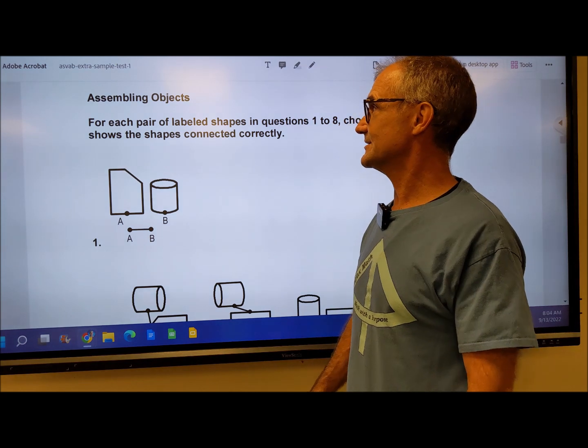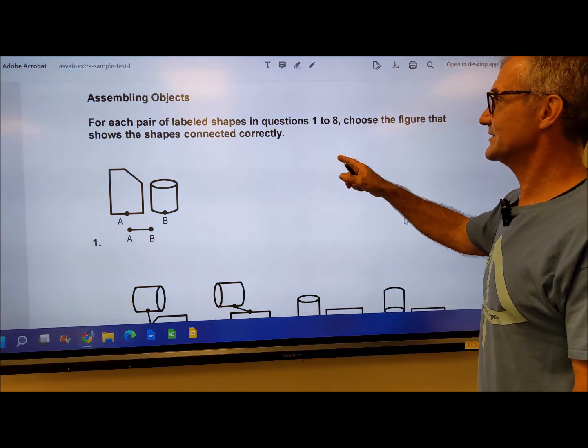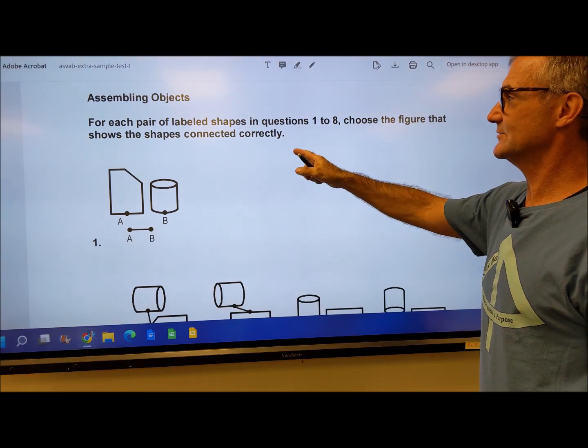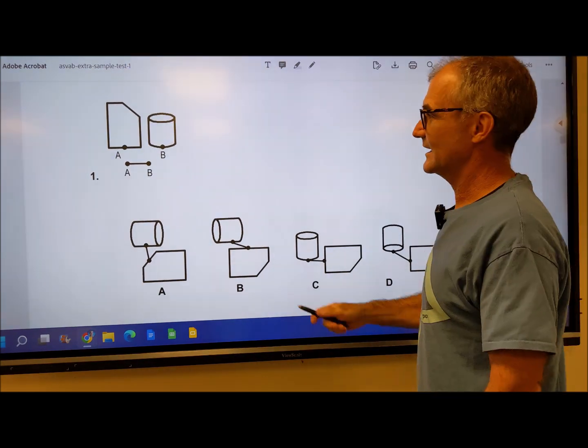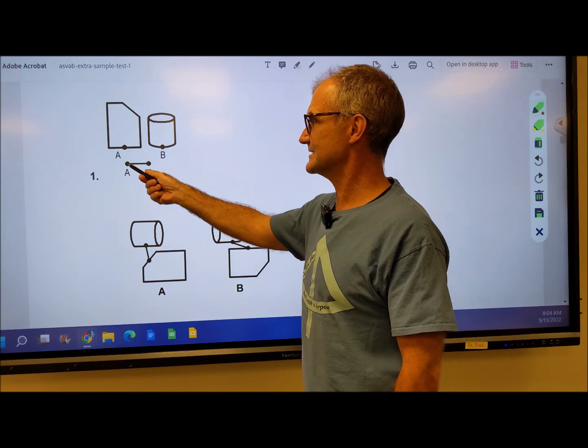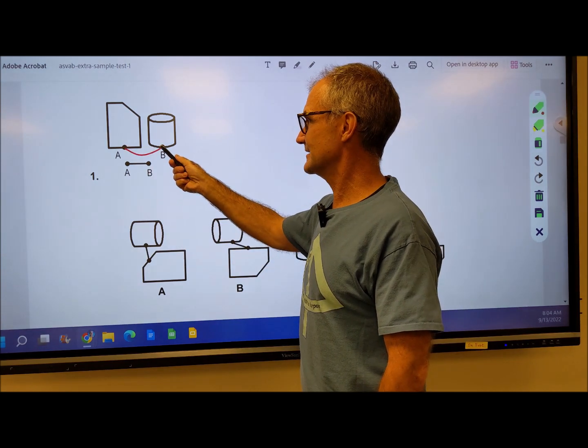Let's go ahead and get started. Assembling objects: for each pair of labeled shapes in questions one through eight, choose the figure that shows how they would connect correctly. I have figures A and B and I'm going to connect them with the line segment AB. So that's going to touch there and there like that.